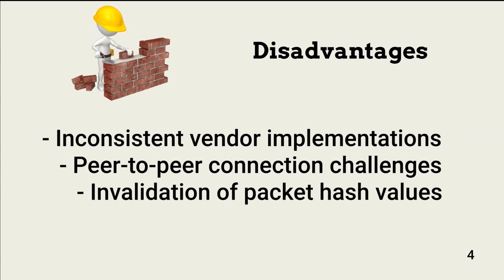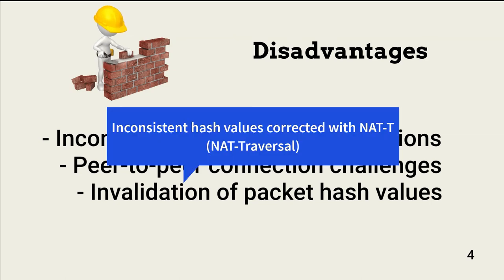NAT changes incoming packets to reflect the internal delivery addresses. This changes the hash value of the packet. Consequently, a recipient comparing their calculated hash against the hash included in the packet will find them different. This breaks IPsec. This is addressed with NAT-T, or NAT traversal.